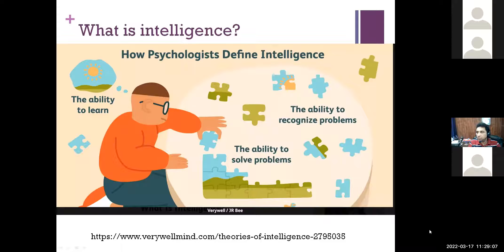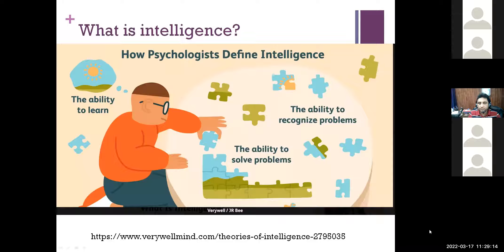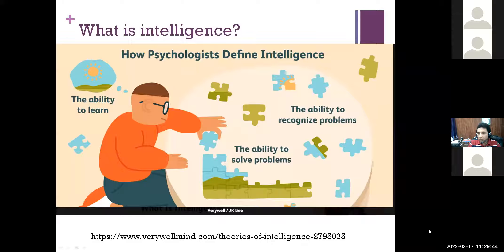Brinda: I think intelligence is learning from experiences and applying it in future situations. So learning ability — intelligence is the learning ability of an individual. Two solid thoughts have come forward: one is the ability to solve problems, and second is to learn from experiences. The third was about finding alternative ways of solving problems — either we put it with solving problems or study it separately as a creative ability, which we'll discuss in the next class.